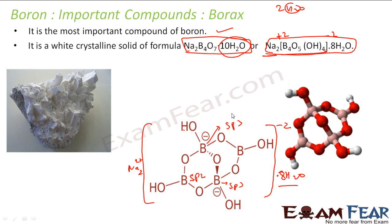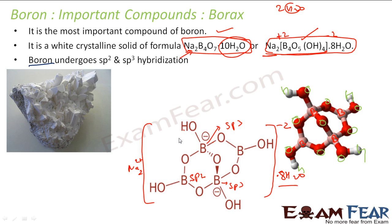This is the three-dimensional structure of borax. The pink ones are my borons, the red ones are my oxygens, and the white ones are my hydroxyls. As we have told, the boron undergoes sp2 and sp3 hybridization — these are sp3 hybridized and the other ones are sp2 hybridized — two sp2 and two sp3 hybridized.